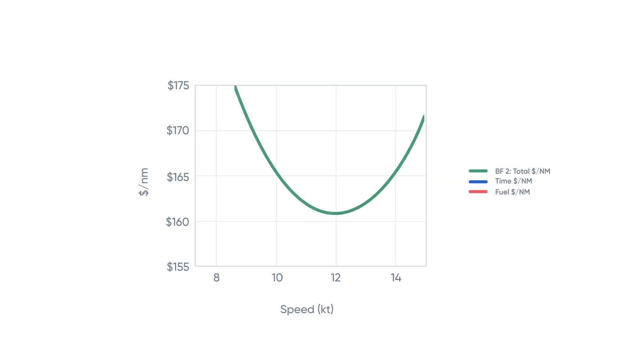If you zoom in, you can see that adjusting your speed for CII can have quite large implications. For example, if you drop by almost two knots to meet a CII requirement, you're actually going to be spending about $5 extra per nautical mile. That doesn't sound like a lot, but if you're traveling 60,000 miles a year, that would be $300,000. So there are real economic decisions to be made around how we set the value of CII and how we translate that into voyage optimization constraints.